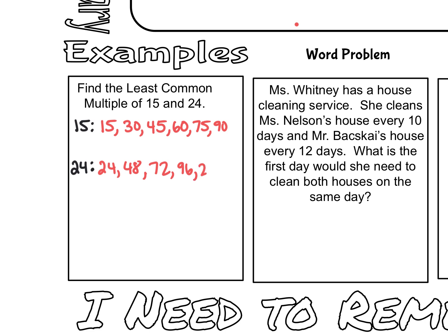After 96 we have 120. And for 15, 90 plus 15 would be 105, and 105 plus 15 would be 120. At this point I can stop because I see that 120 ends up in both of those lists, so that would be their least common multiple. The least common multiple of 15 and 24 is 120.